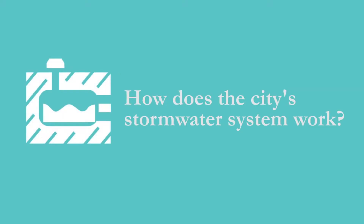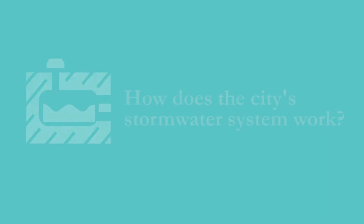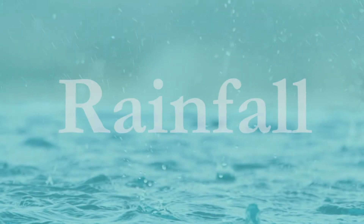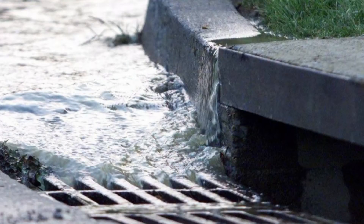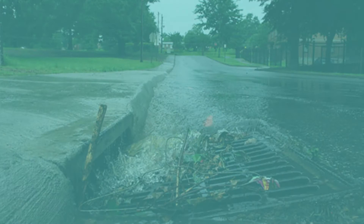How does the city's stormwater system work? Stormwater is the direct result of rainfall. To prevent flooding, stormwater must flow or shed to collection areas intended for this purpose.